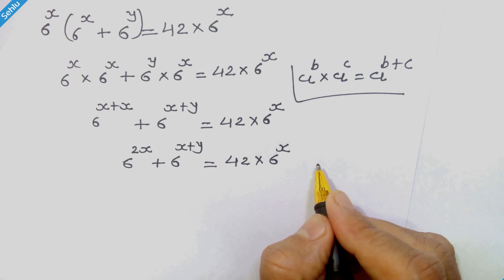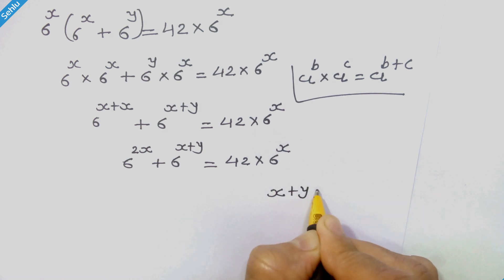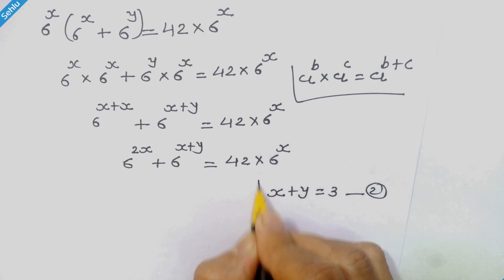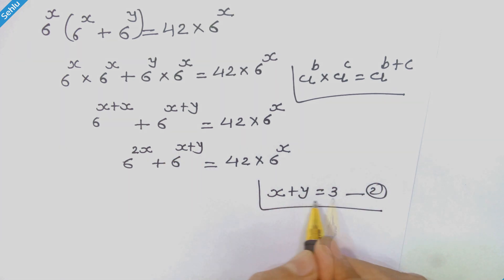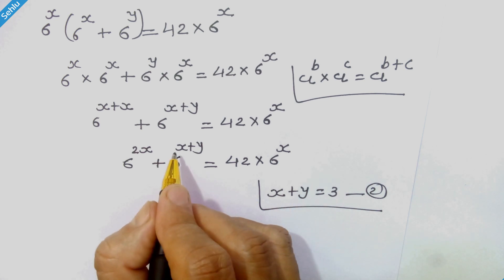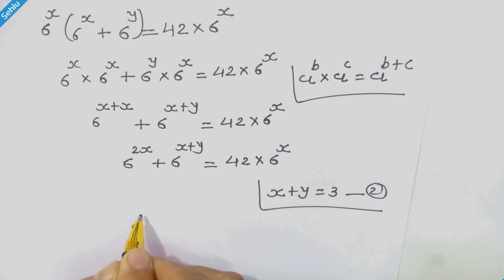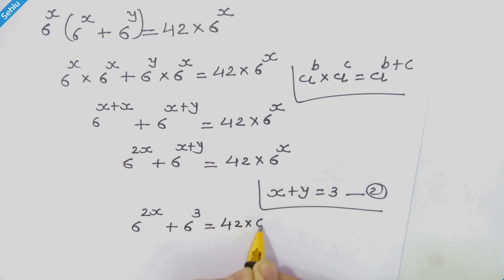Now check equation 2, which is x plus y is equal to 3. We have x plus y in our expression, so let's substitute 3 in place of x plus y. So we can write 6 raised to 2x plus 6 cubed is equal to 42 times 6 raised to x.